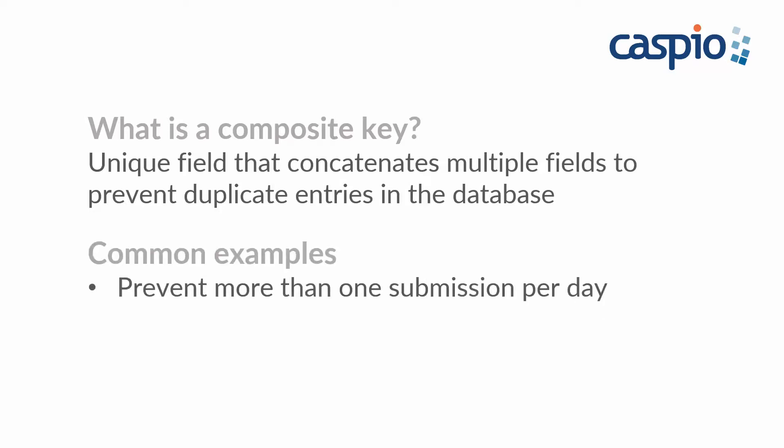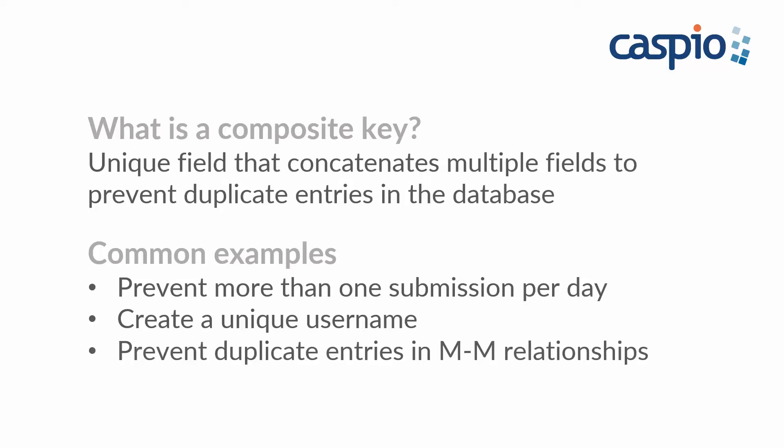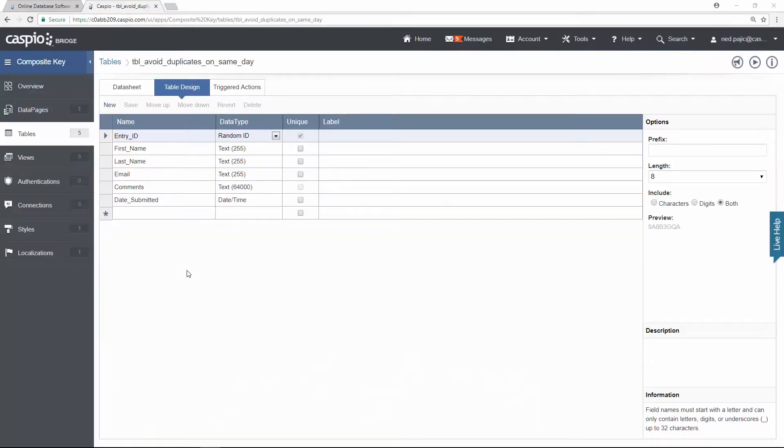Today we will look at three of the more common examples. In the first example I will show you how to limit one submission per day. In the second example I will show you how to create a unique username by combining three different fields. And in the last example we will look at how to prevent duplicates in a many-to-many relationship. So let's take a look at our first example.